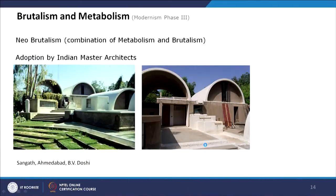Another example is Sangath in Ahmedabad by B.V. Doshi — his own working office. Here also there is exposed concrete, and you can see the roof will allow water to flow; the runoff will be carried from this water spout and go as a cascading fountain. This exaggerates the way rain water flows, creating an element of design.